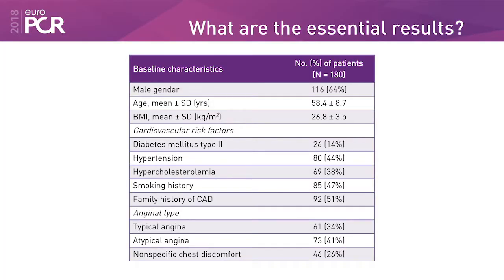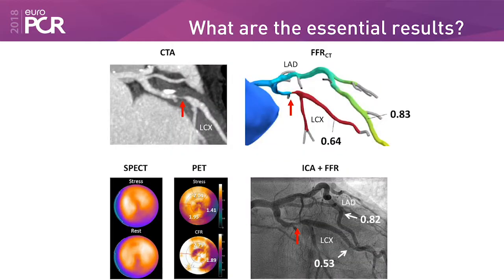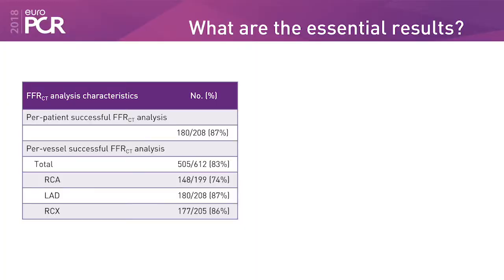There were 180 patients out of 208 for whom we were able to obtain an FFR-CT value — predominantly male, age close to 60, with the usual cardiovascular risk profile and a distribution of typical and atypical chest pain. An example case shows a CT coronary angiography with plaque in the circumflex, a SPECT image with ischemia, a PET image with ischemia, and an FFR-CT value of 0.64 in the circumflex, which coincided with 0.53 measured invasively in the cath lab — all concordant results.